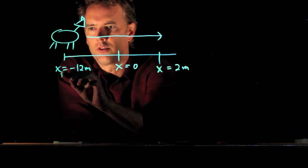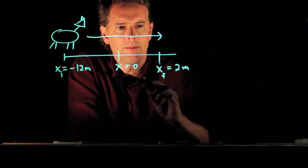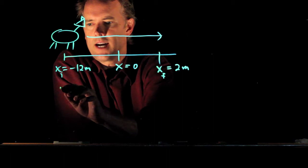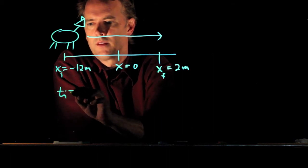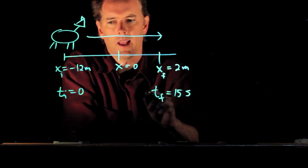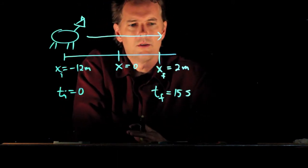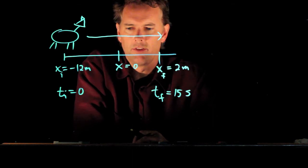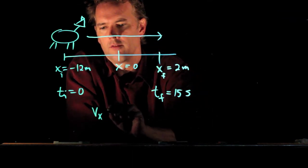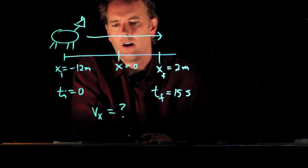So this is x initial, this is x final, and what they tell us in the problem is that the amount of time it takes is 15 seconds. So we can let the initial time be 0, the final time be 15 seconds, and now they want to know what is the velocity of the dog.